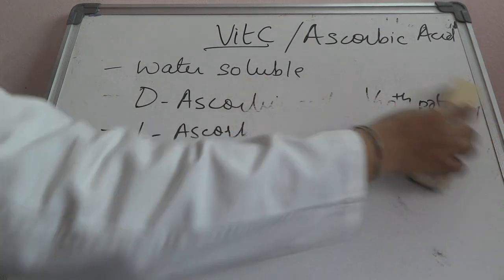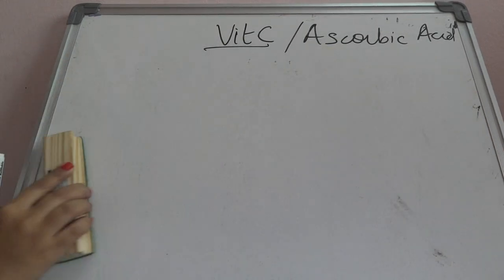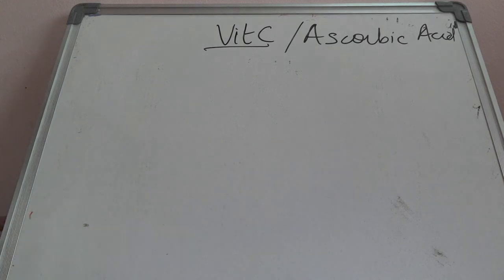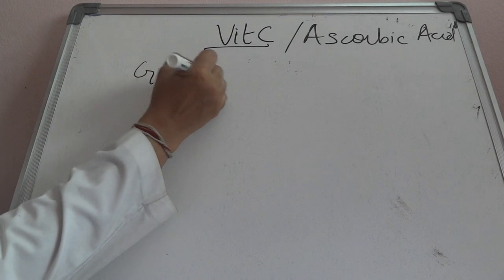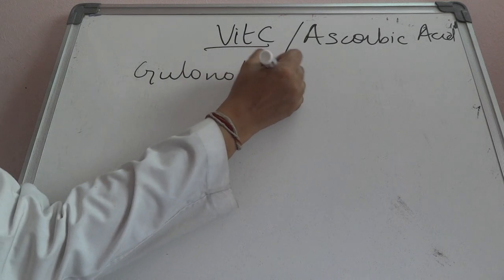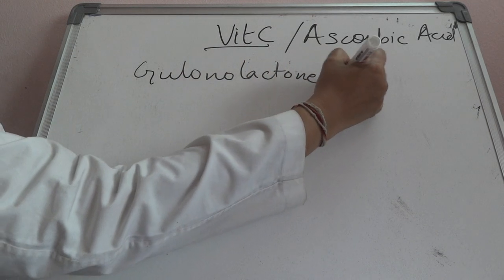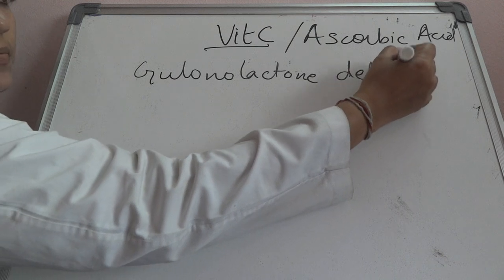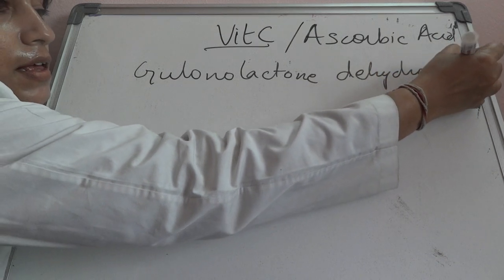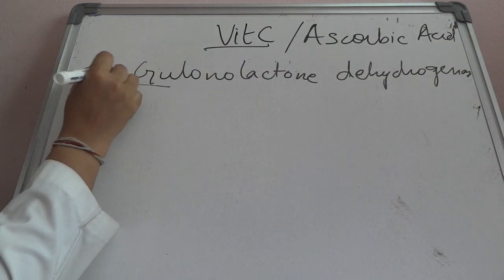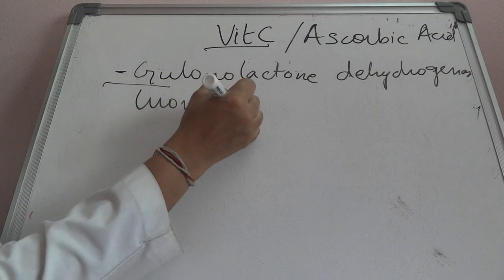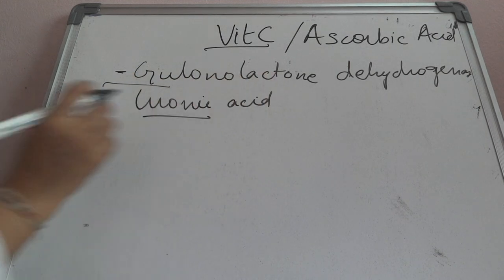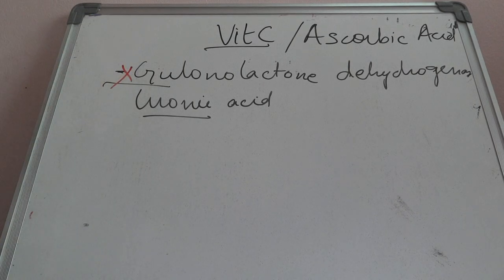In humans, vitamin C cannot be produced because humans lack the enzyme gulonolactone dehydrogenase. This enzyme is present in the uronic acid cycle, and because we do not have it, vitamin C cannot be synthesized by humans.